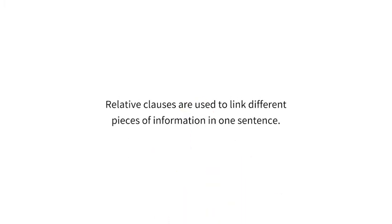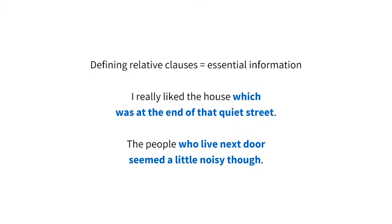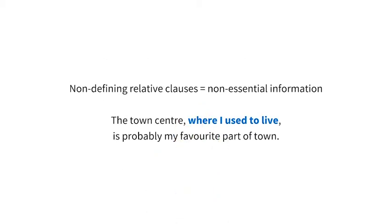Relative clauses are used to link different pieces of information in one sentence. Defining relative clauses give us essential information which tells us exactly which person or thing we are referring to. Non-defining relative clauses give us extra non-essential information. The sentence still makes sense without this relative clause.